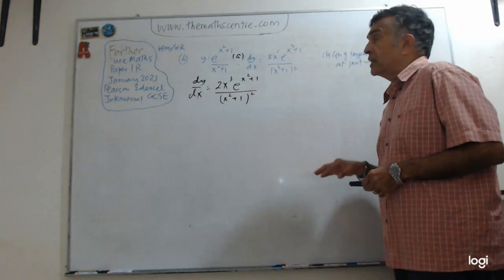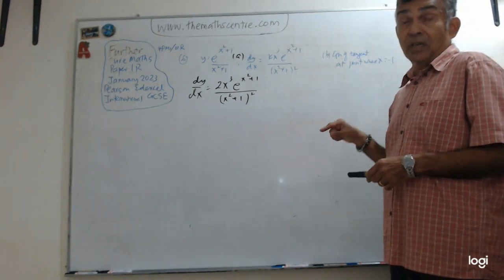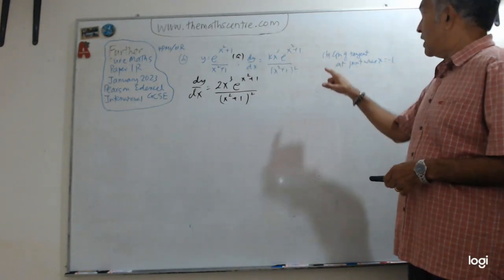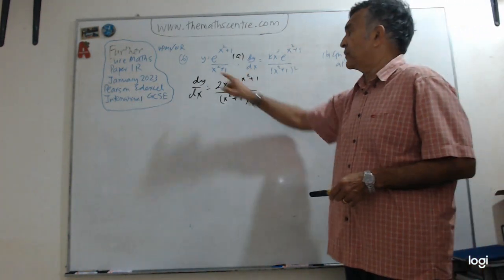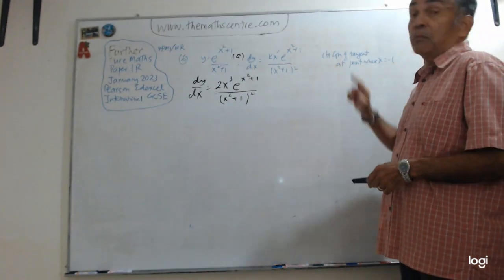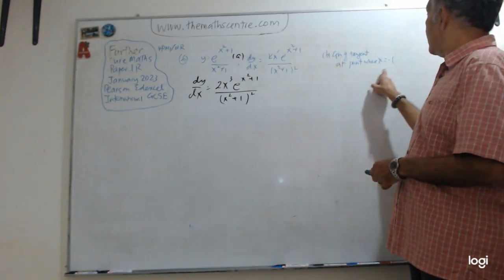And now we are asked to find the equation of the tangent to the curve. I repeat, we are asked to find the equation of the tangent to the curve with this equation, at the point where x equals negative 1.